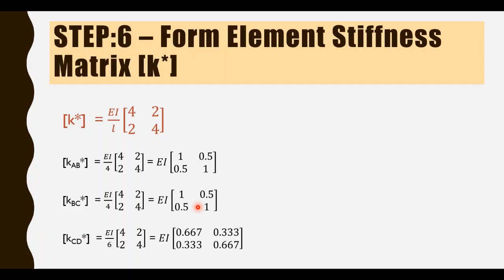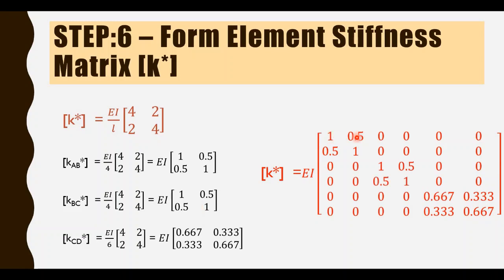Keeping all these individual element stiffness matrices diagonally, we get the overall element stiffness matrix K star of the structure, which is a 6×6 matrix with values: [1.5, 0.5; 0.5, 1] for AB, [1.5, 0.5; 0.5, 1] for BC, and [0.667, 0.333; 0.333, 0.667] for CD, all multiplied by EI.